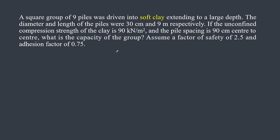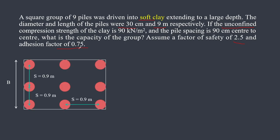A few things are different from the first video. We have a square group of nine piles in a soft clay. The diameter of the pile is 30 cm, the length is 9 meters, and the unconfined compressive strength of the clay is 90 kN/m². Pile spacing is 90 cm center to center. I've created a diagram showing the arrangement. The spacing is 0.9 meters, converted from centimeters.